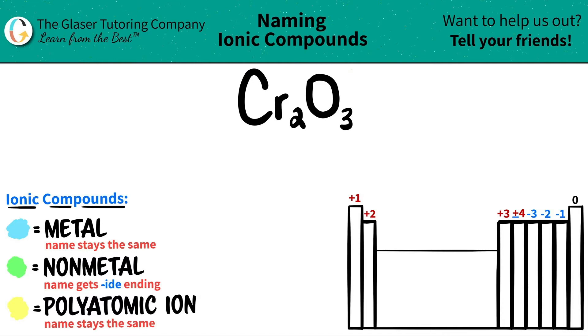If we just look at where those are on the periodic table, chromium is somewhere over here. It's part of the transition metal block, so it's a metal. Oxygen is on the right-hand side, it's right over here. That's nonmetal territory, so oxygen will always be a nonmetal.